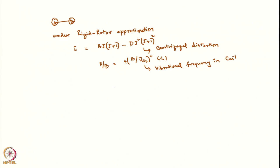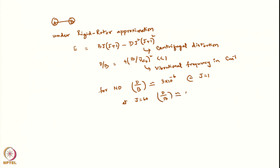For diatomic molecules such as NO, D/B is approximately equal to 3×10⁻⁶ at J=1. But if I go to J=60, D/B will be approximately equal to 0.01. That means even for very large values of J, one can ignore D/B — the value of D is going to be really very small.